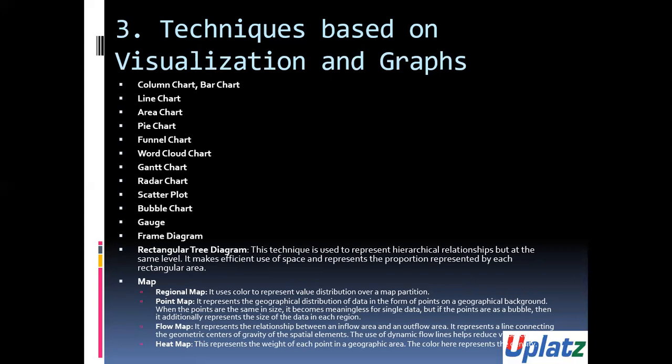Then we have scatter plot. It shows the distribution of variables in the form of points over a rectangular coordinate system. The distribution of the data points can reveal the correlation between the variables. Then we have bubble chart, which is a variation of the scatter plot. Then we have gauge. It's a kind of materialized chart. The scale represents the metric and the pointer represents the dimension.